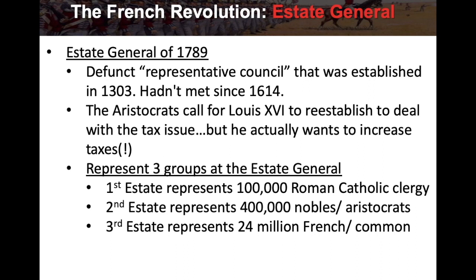They resurrect a government body called the Estate General — a representative council that had been defunct. It had not been in operation for a long time. The Estate General of 1789 was originally established in 1303 but had not met since 1614. The aristocrats call for Louis XVI to reestablish it to deal with these taxes, though Louis is also thinking he can use it to increase taxes to continue his lavish lifestyle.